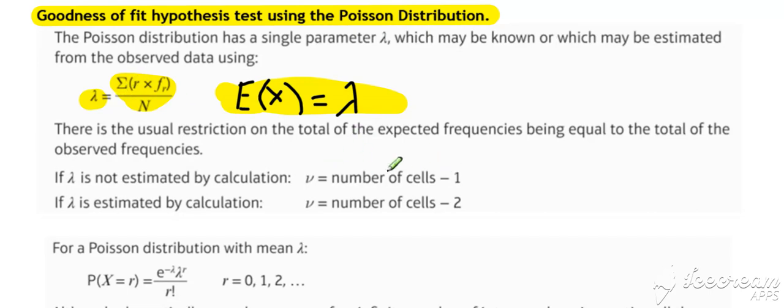And similar to binomial, if we've had to estimate lambda, then we take away 2 for ourselves for degrees of freedom. If we haven't estimated lambda, if it's given, then we take away 1. So just look out for that for your degrees of freedom.